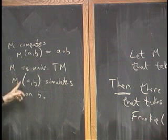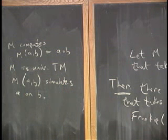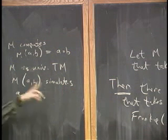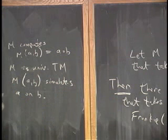That means M of AB simulates A on B. It assumes it gets a Turing machine and it simulates it on B.